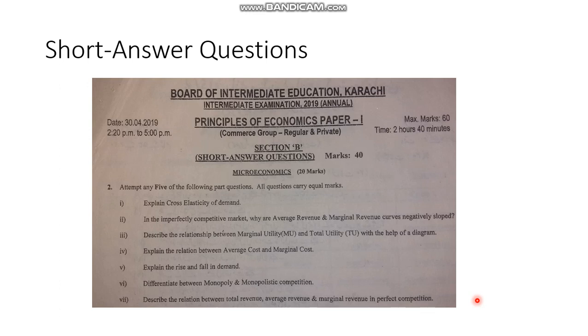Section B is for short answer questions. The remaining duration shown is 2:20 to 5pm — two hours forty minutes — and total time for this part is 60 marks worth. Section B is for 40 marks total and is divided further into two parts: microeconomics and macroeconomics. You can see there are 7 parts in question two; attempt any five of the following part questions, and the total marks for question two is 20, so each question carries 4 marks.